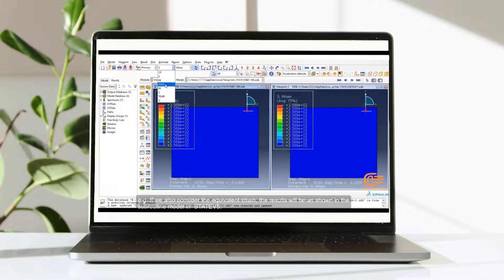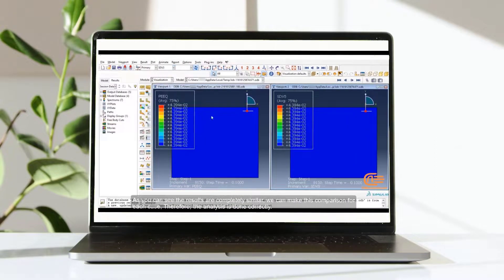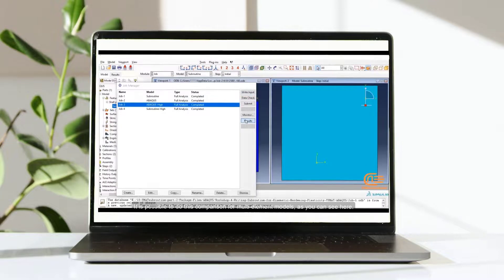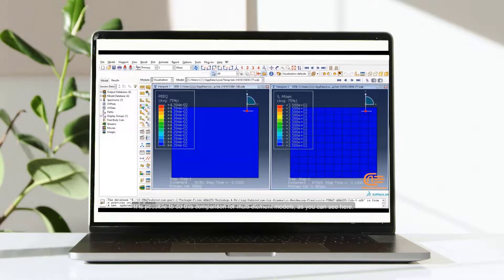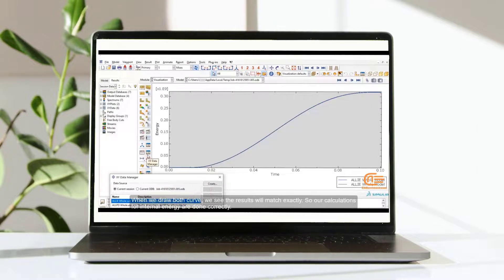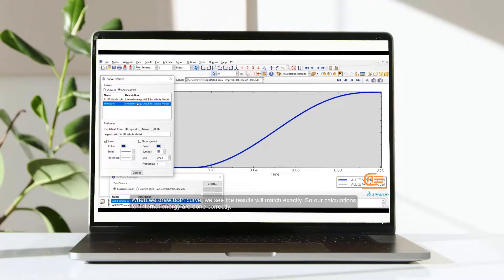For example, if we also consider the equivalent strain, the results will be as shown in the subroutine model in state v5. As you can see, the results are completely similar. We can make this comparison for each case. Therefore, the analysis is done correctly. It is possible to do this comparison for multi-element models, as you can see here. When we draw both curves, we see the results will match exactly. So our calculations for internal energy are done correctly. In order for this comparison to be fully visible, we use two different colors to draw the diagram.